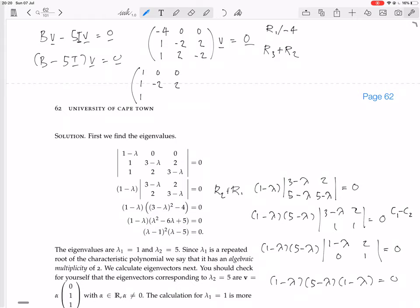We could do row 3 plus row 2. That will become 2, 0, 0. Now we could do row 2 minus row 1 and row 3 minus 2 times row 1. That's going to give us [[1,0,0], [0,-2,2], [0,0,0]] times V equals 0. We could do row 2 divided by minus 2. That will give us [[1,0,0], [0,1,-1], [0,0,0]] vector V equals 0.